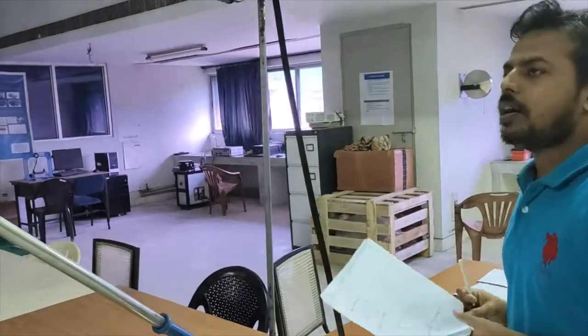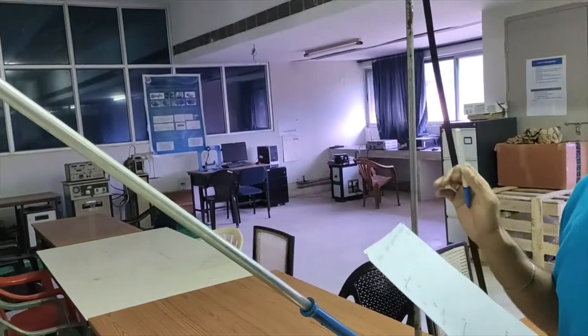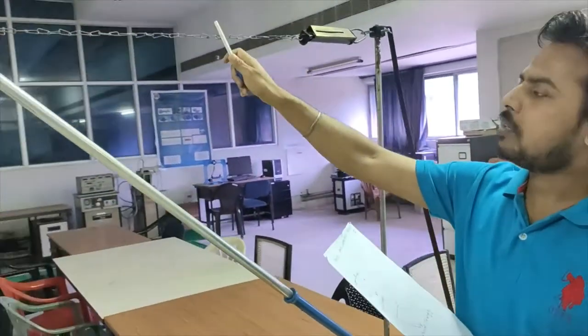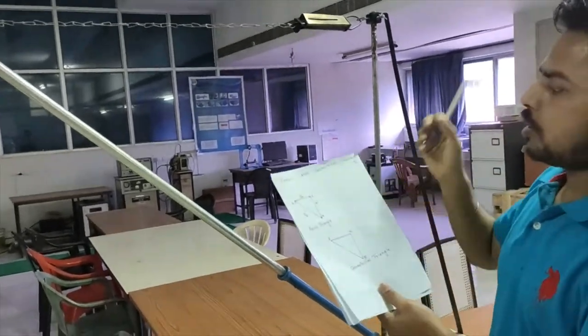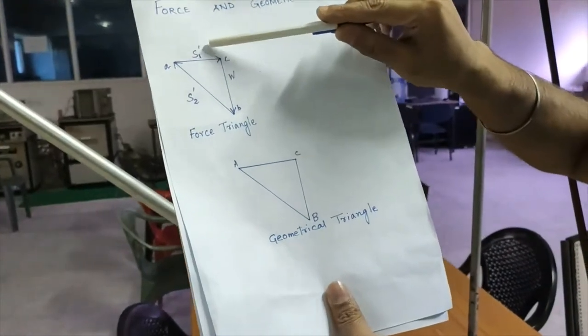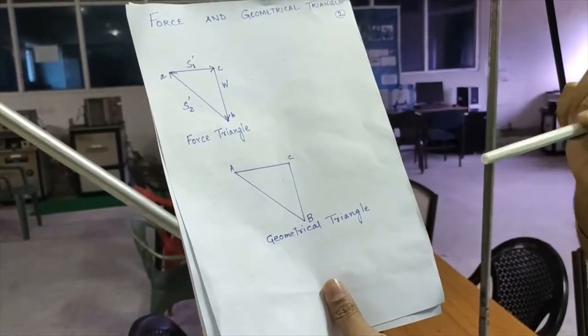Let us assume S1 dash and S2 dash be the correct values for S1 and S2, the tensile force and the compressive force. This is the force and geometrical triangle. S1 dash and S2 dash and this is W. This is the geometrical triangle.